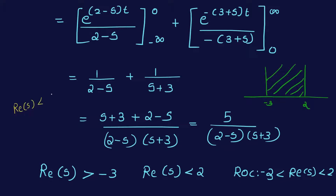For the left-sided component, the ROC condition gives Re(s) < alpha-min, meaning Re(s) < 2. For the right-sided component, Re(s) > -3. The intersection of these two regions gives the ROC: -3 < Re(s) < 2.